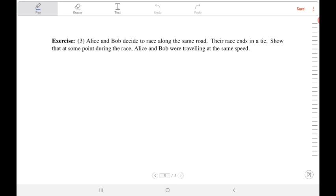Alice and Bob are now having a race along the same road. Their race ends in a tie. Your task is to show that at some point during the race, Alice and Bob were traveling at the same speed. If you have any questions, feel free to come and talk to me in my office hours or to ask on Piazza. Thank you.